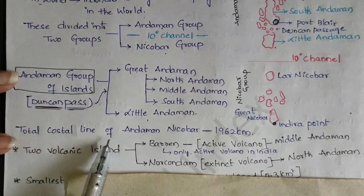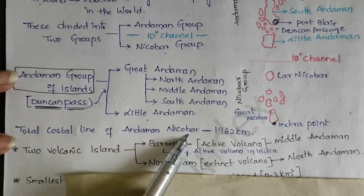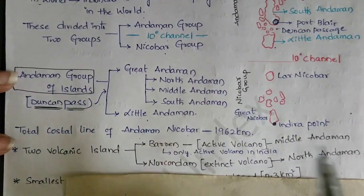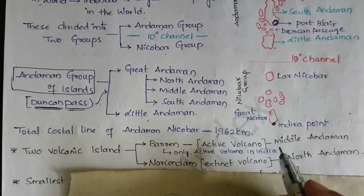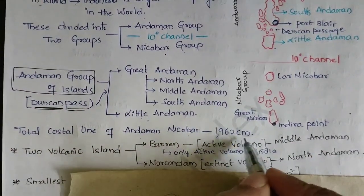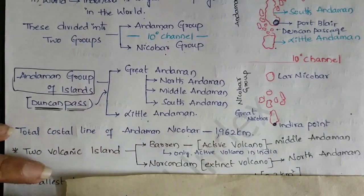The total coastline of Andaman and Nicobar is 1,962 km, which is greater than Gujarat's coastline.